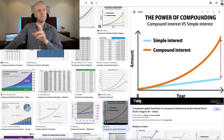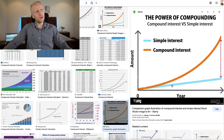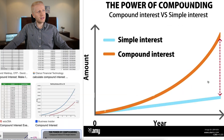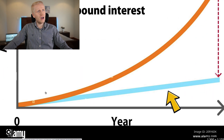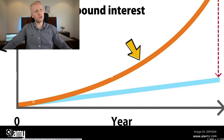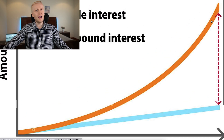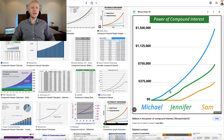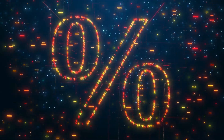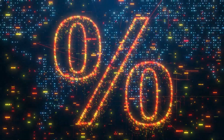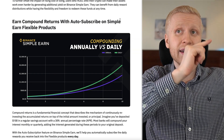Simple interest grows linearly, shown as a blue line, while compound interest grows exponentially, shown as the orange line. The longer you go, the bigger the difference. With Binance Simple Earn, your earnings don't compound just monthly or annually like many other interest accounts — on Binance, your interest compounds every single day.